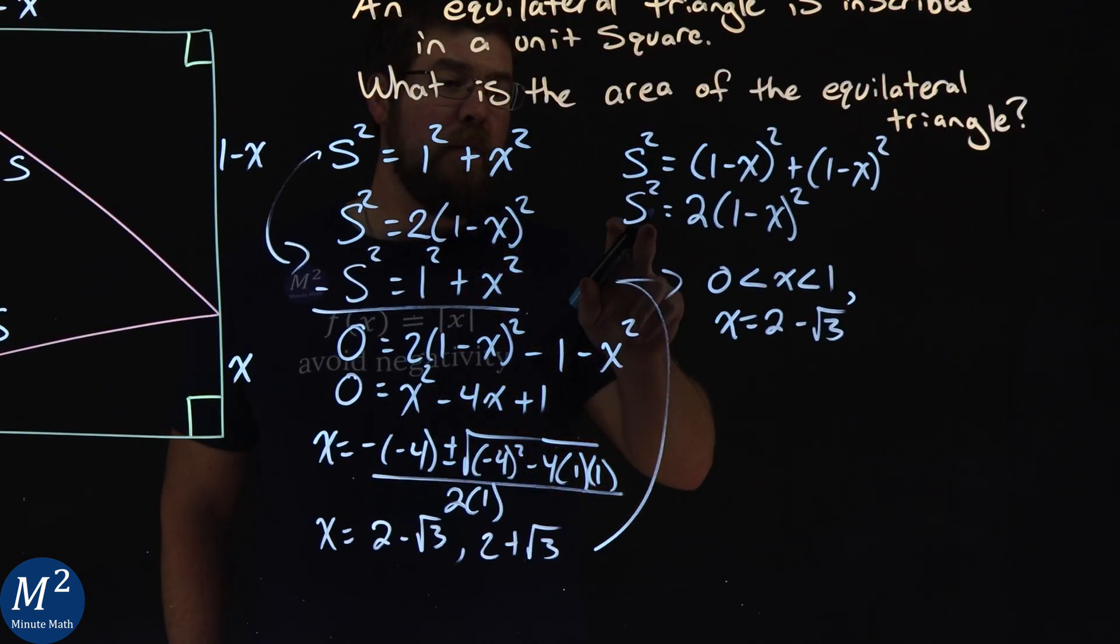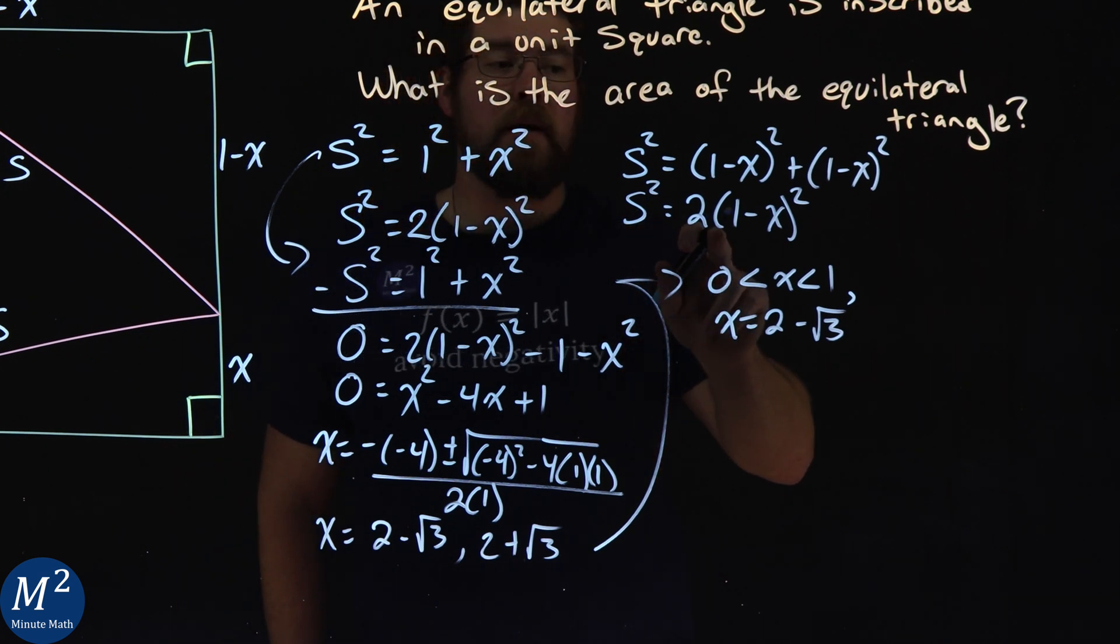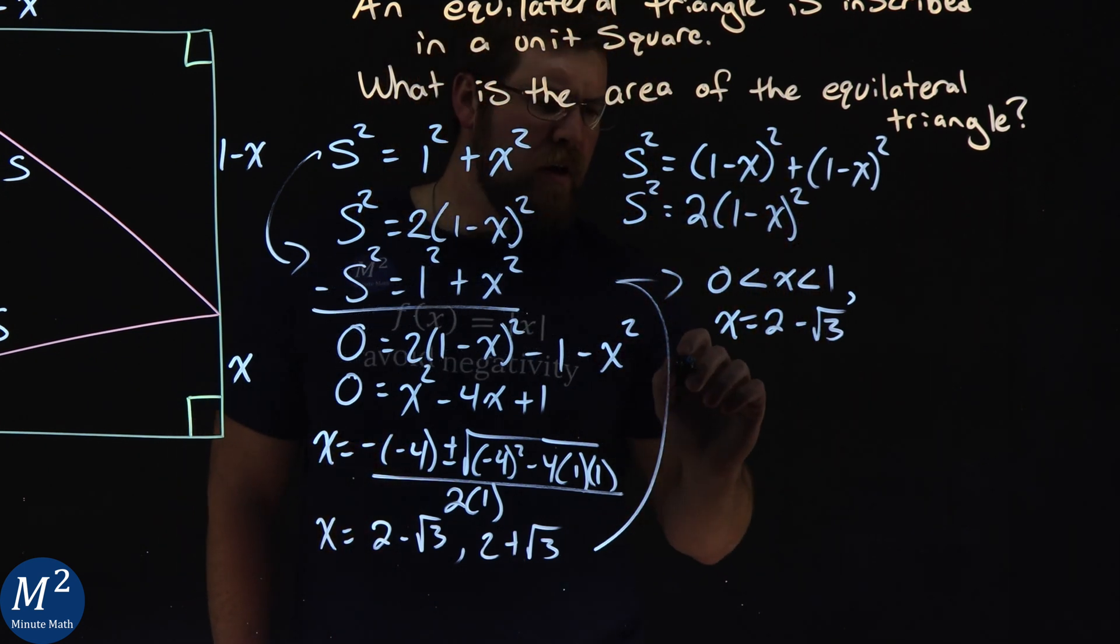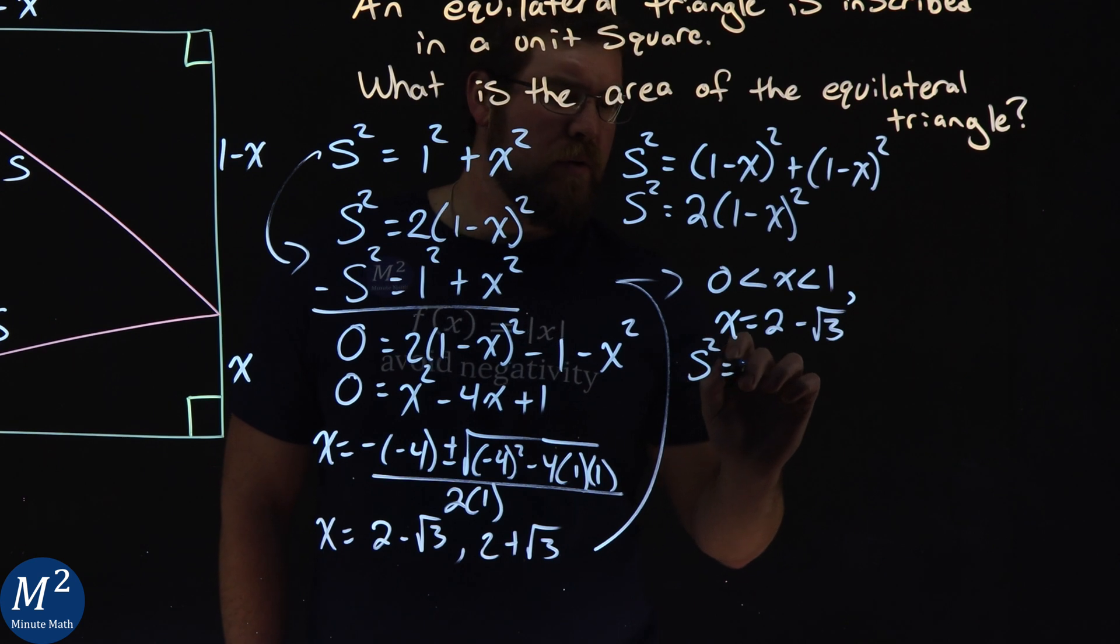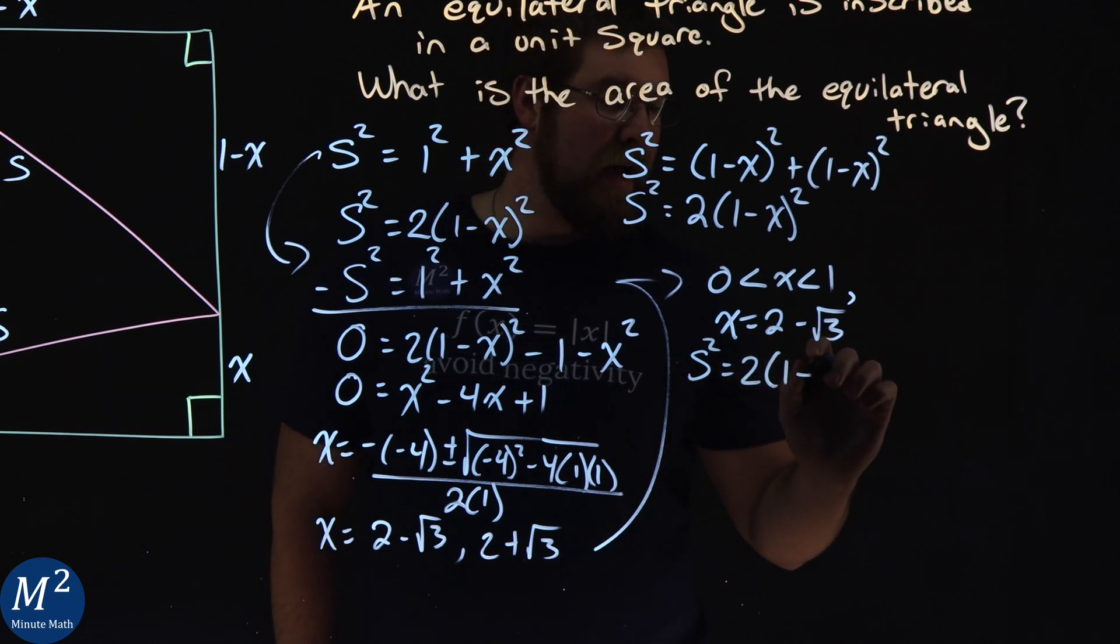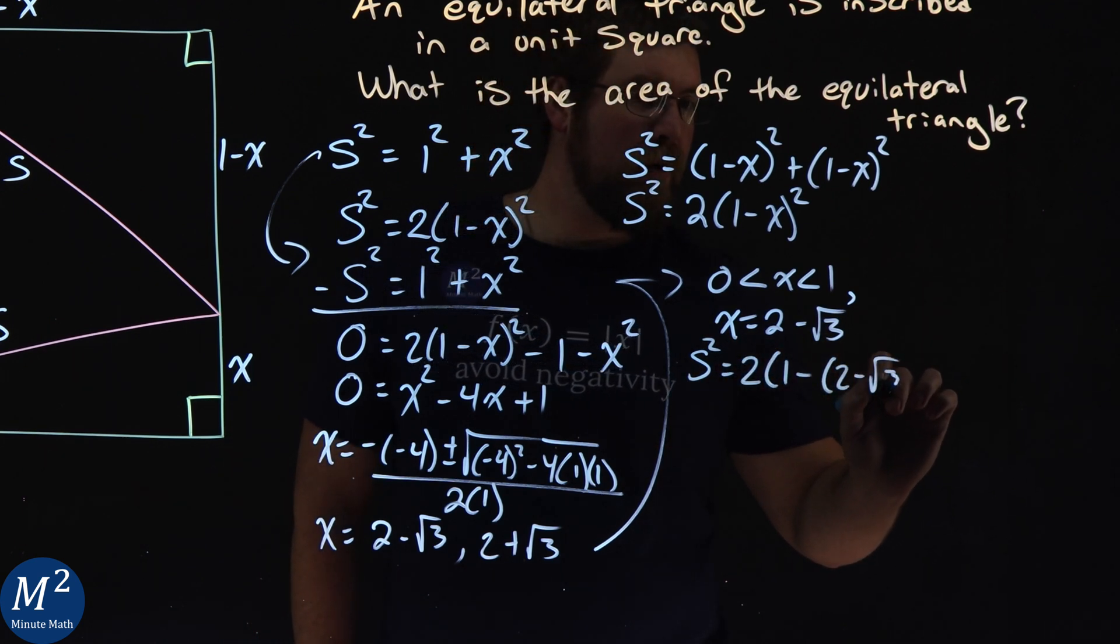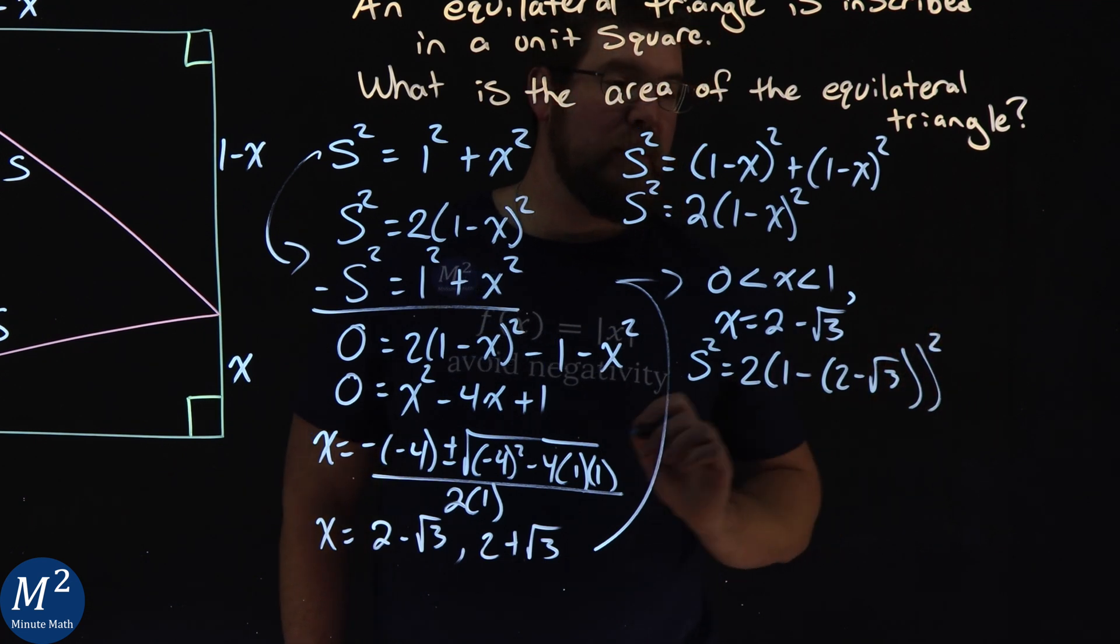Now we're going to apply what we've got earlier. Side squared equals 2 times (1 minus X) squared. So side squared here is equal to 2 times 1 minus our X value, 2 minus square root of 3. All that is going to be squared.